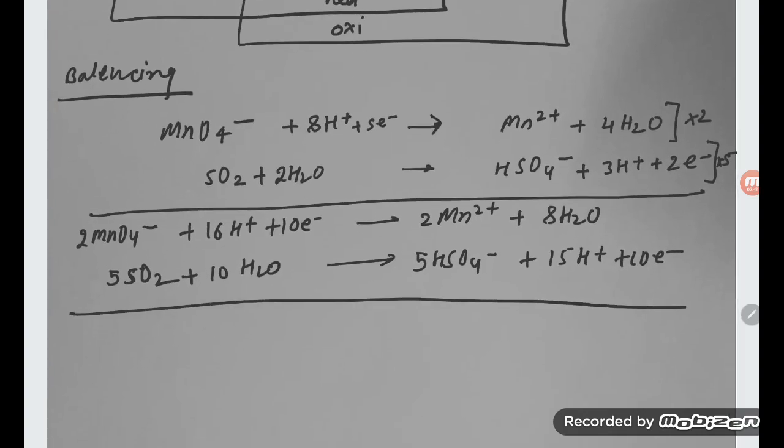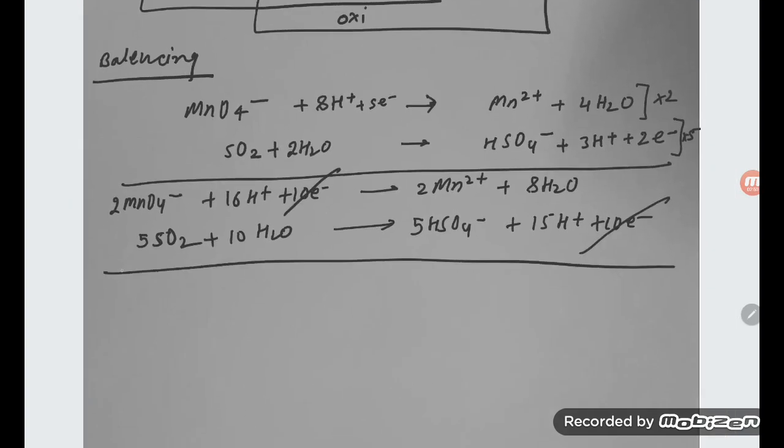So after multiplying, you see 10 electrons right side, 10 electrons left side will be cancelled out. You add this one. 16H plus is there and 15H plus. So if you are cancelling, it will give 1H plus. Here you see, 10 water molecules and 8 water molecules. It means here it will be left 2H2O.